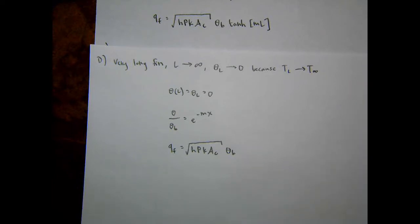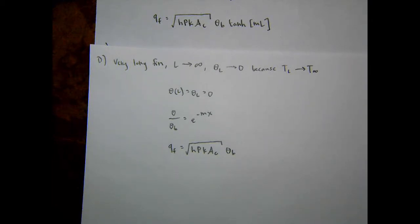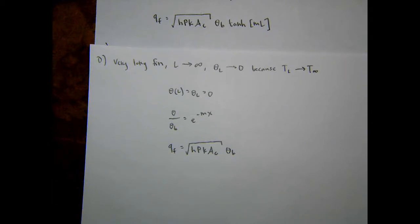Those are the four main boundary conditions for fins — as complicated as we'll get for temperature distributions in this class: single fins, uniform cross-section, straight fins, either rectangular or circular cross-section, with one of four boundary conditions at the end.